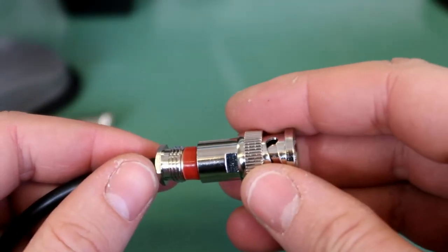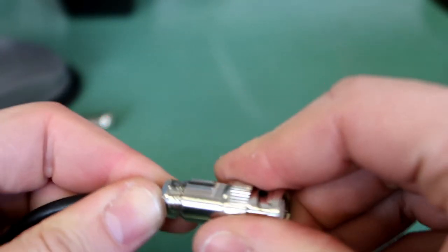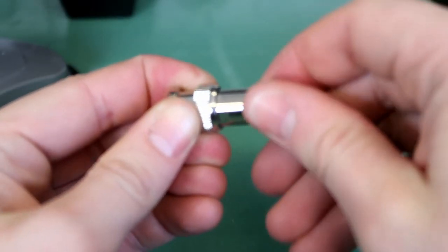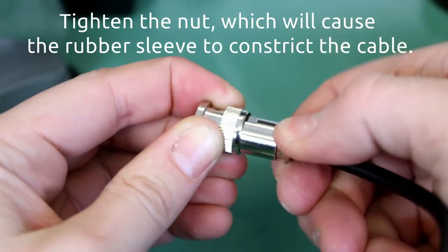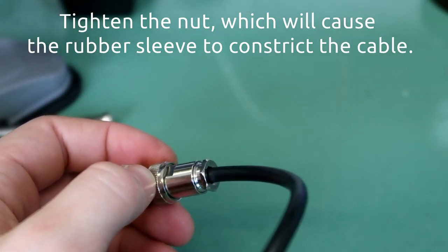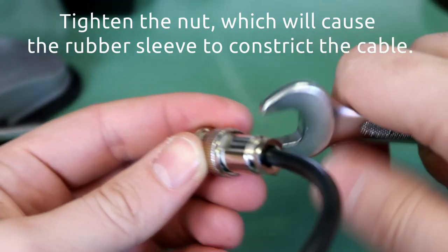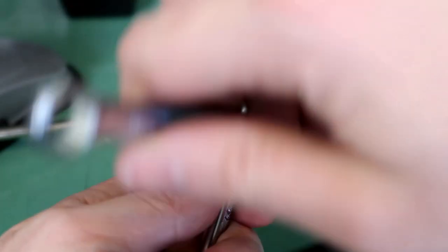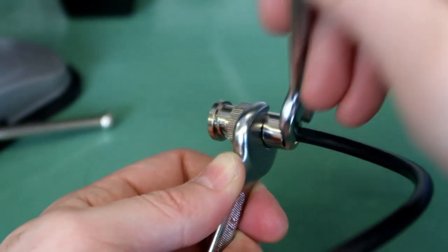Now add the housing and tighten the nut. I used 10 and 11mm wrenches in my case, just make sure you tighten all the way. This makes the rubber sleeve constrict the cable and hold the connector in place.